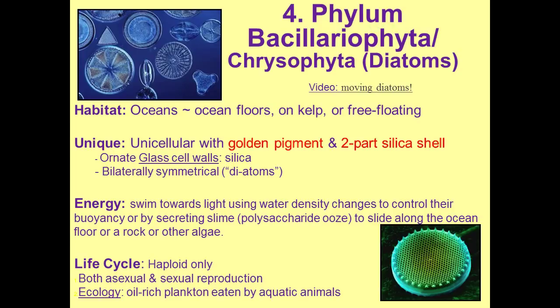Phylum Bacillariophyta, or Chrysophyta — the diatoms. Their habitat is the oceans: ocean floors, on kelp, or free-floating. They're unique because they're unicellular with golden pigment and a two-part silica shell made of glass, which can be ornate and refracts and reflects light beautifully under a microscope. They are bilaterally symmetrical — 'di' meaning two in the word diatom. They move toward light using water density changes to control buoyancy, or by secreting a polysaccharide slime to slide along surfaces. Adults are typically haploid. Ecologically, they're oil-rich plankton eaten by aquatic animals and produce the majority of the oxygen we breathe.